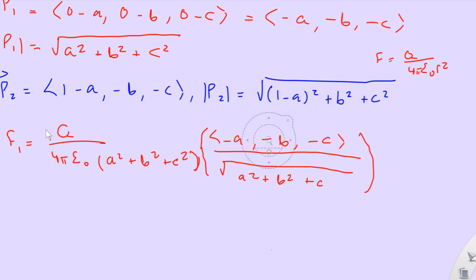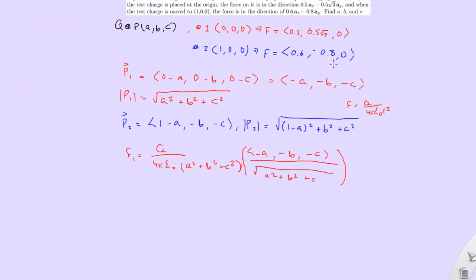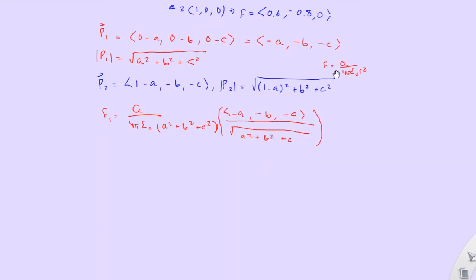So we can combine these two, but also, we already know F1. Remember, F1 was given to us. F1 is this guy up here. F1 was given to us right here. 0.5, 0.5 square root of 3. So we could set that equal right now. So this will be 0.5, 0.5 root 3, 0.